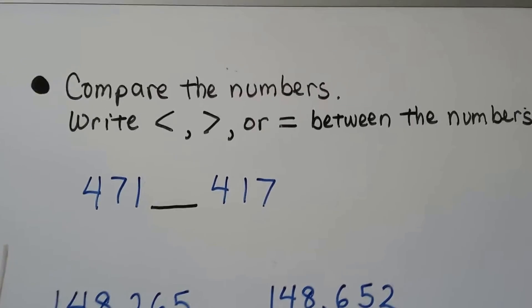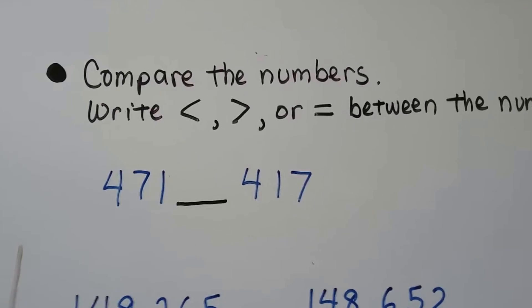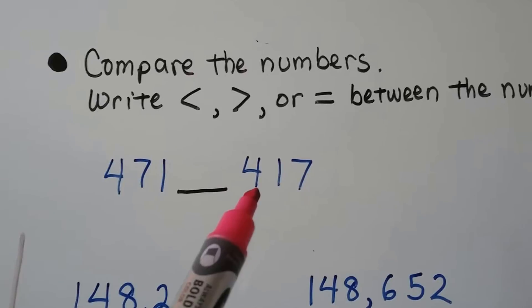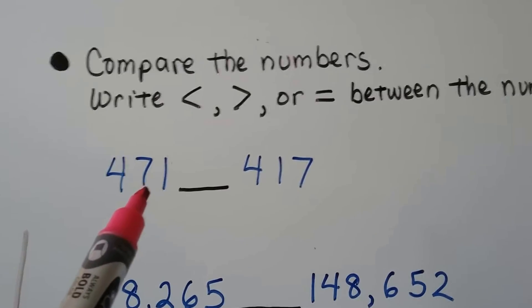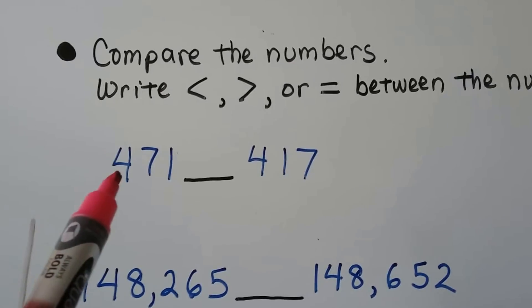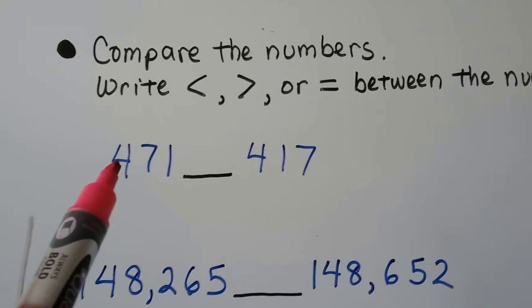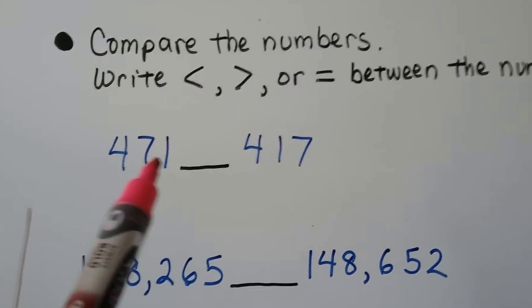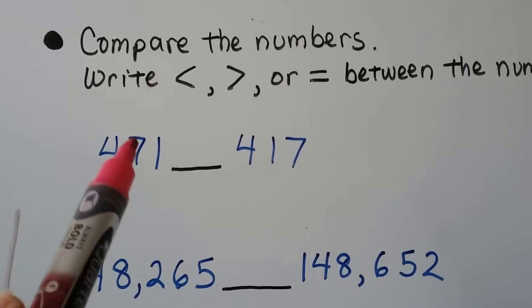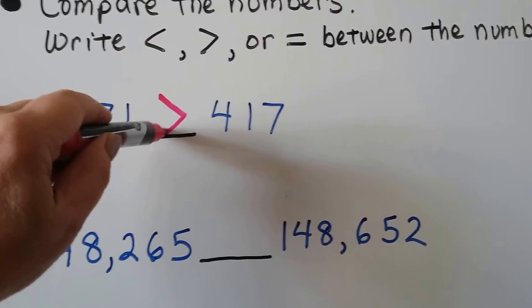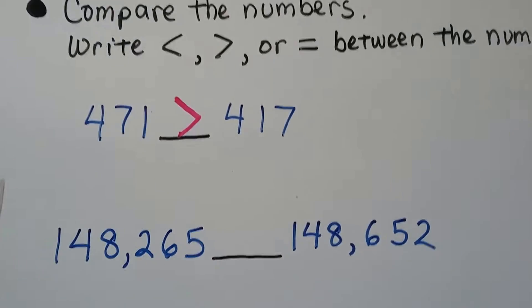To compare two numbers, the first thing we do is look at the hundreds place — they both have a 4 in the hundreds place. But look at the tens place: one has a 7 and the other only has a 1. We start on the left with the largest place value; since they were the same, we move to the next. There's a 7 versus a 1, so this one's greater. There's a rule from grade school: big mouth to big number.